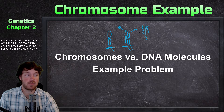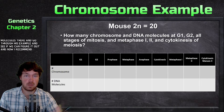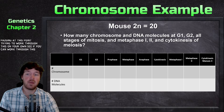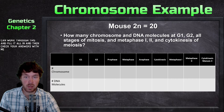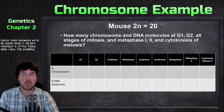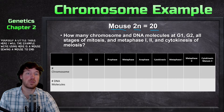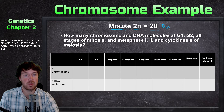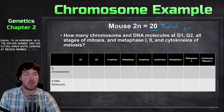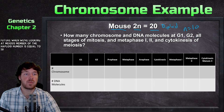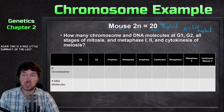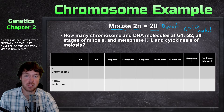I recommend pausing at this point and trying to work through this on your own — see if you can fill it all in, then check your answers with me. Draw yourself a little table. The example we're using here is a mouse, so in a mouse 2n equals 20 — remember 20 is the diploid number. For meiosis, the haploid number is equal to 10. This is a nice little summary of the last chapter.